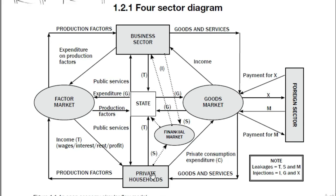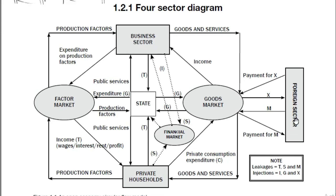Another leakage is taxation: the state taxes private households through income tax and also taxes the business sector through company tax. The third leakage is payments for imports. When we import, we buy goods from foreign countries and that money exits our circular flow. As you can see, the money goes to foreign countries — so when you buy a good from China, you are making that money exit our circular flow.